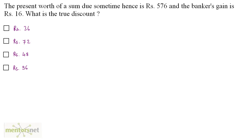The present worth of a sum due sometime hence is 576 rupees and the banker's gain is 16 rupees. What is the true discount?